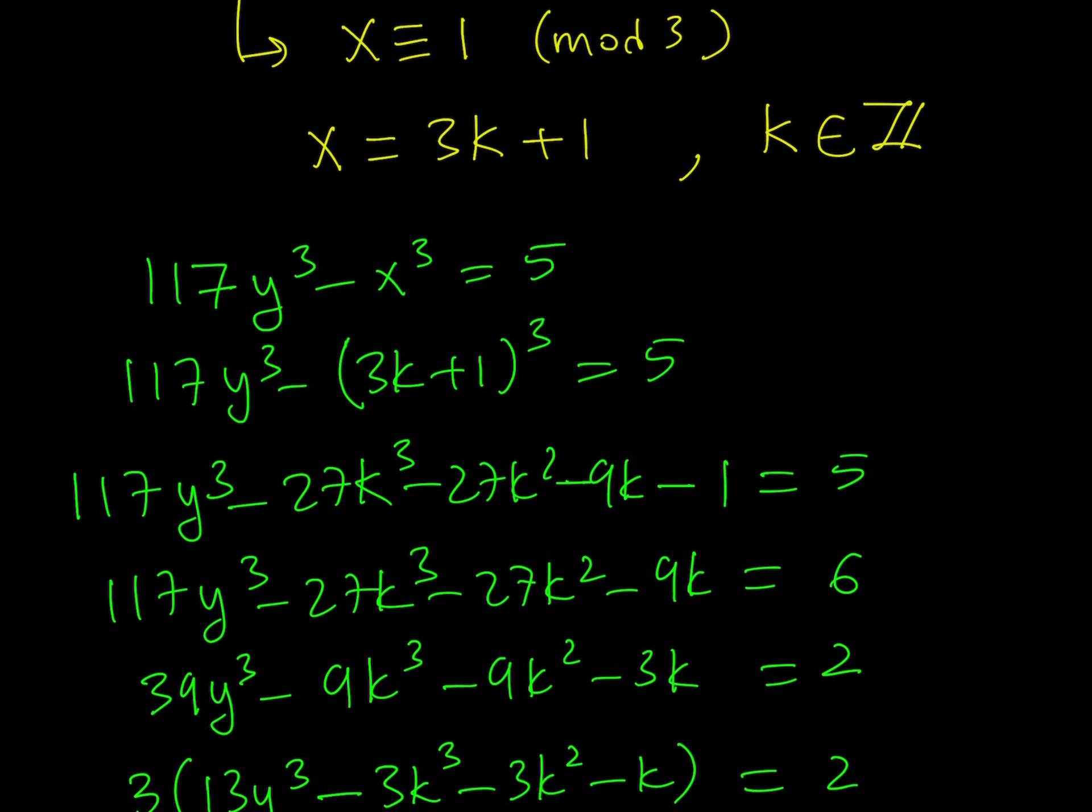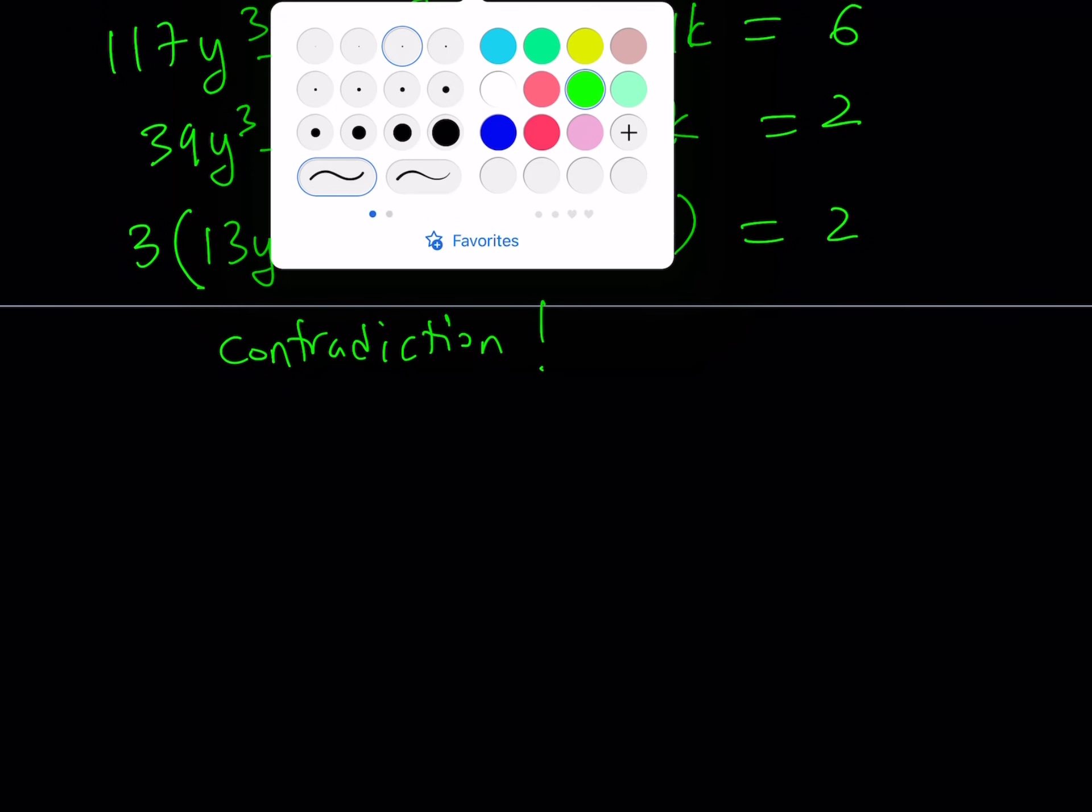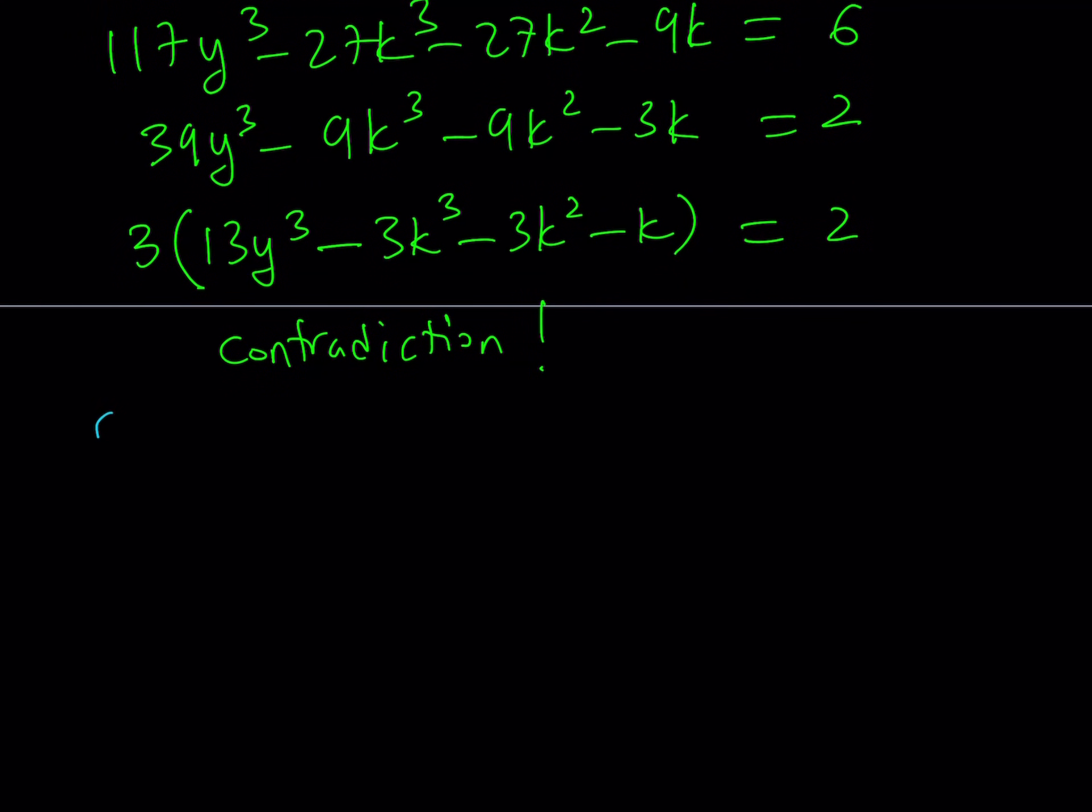Now, let's take a look at it. Remember, we said that k is an integer. Of course, x and y are both integers. So, this is not going to work. We have a contradiction. Therefore, there are no solutions according to the first method. Let's see if the second method gives us the same thing. And, what do you expect, right?